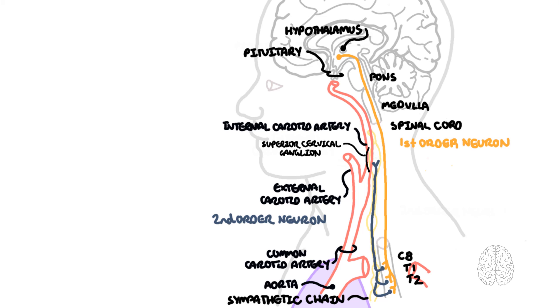The third-order neuron then ascends within the adventitia of the internal carotid artery. The neuron, now termed the oculosympathetic fiber, innervates a few things in the eye. Firstly, the iris dilator muscle, as well as the muller's muscle, which is a small smooth muscle in the eyelid responsible for eyelid elevation.